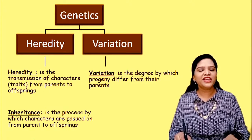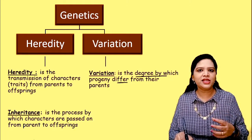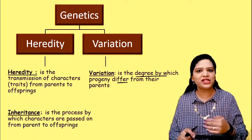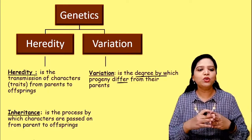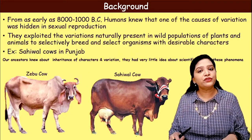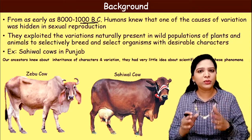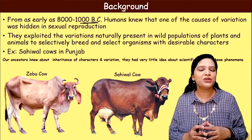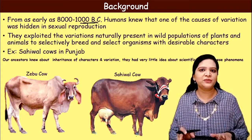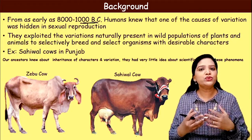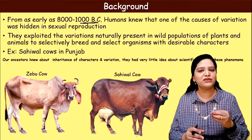Variation is the degree by which the progeny differs from their parents — not 100% of the characters of the parents will be transmitted to their offspring. Genetics involves both heredity and variation. From as early as 8000 to 1000 BC, human beings knew that sexual reproduction is one cause of variation. That's why people in the olden days used to crossbreed animals and plants with different varieties.